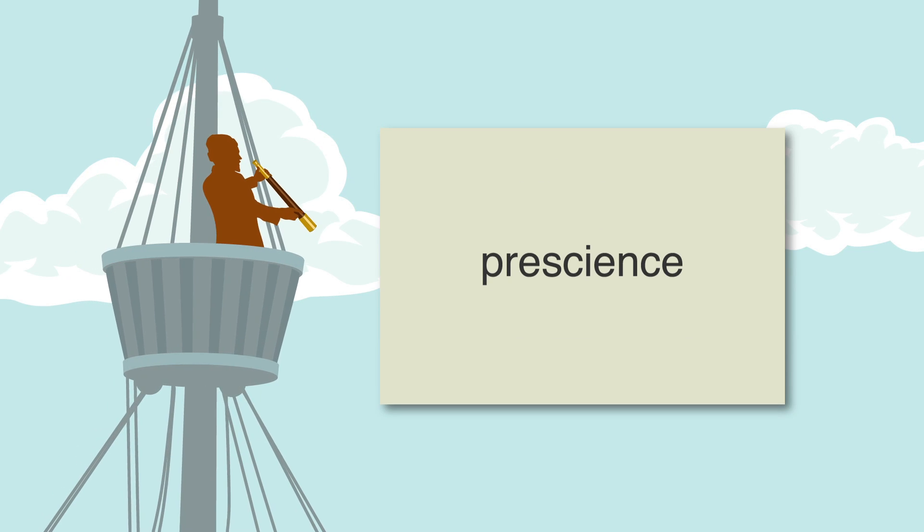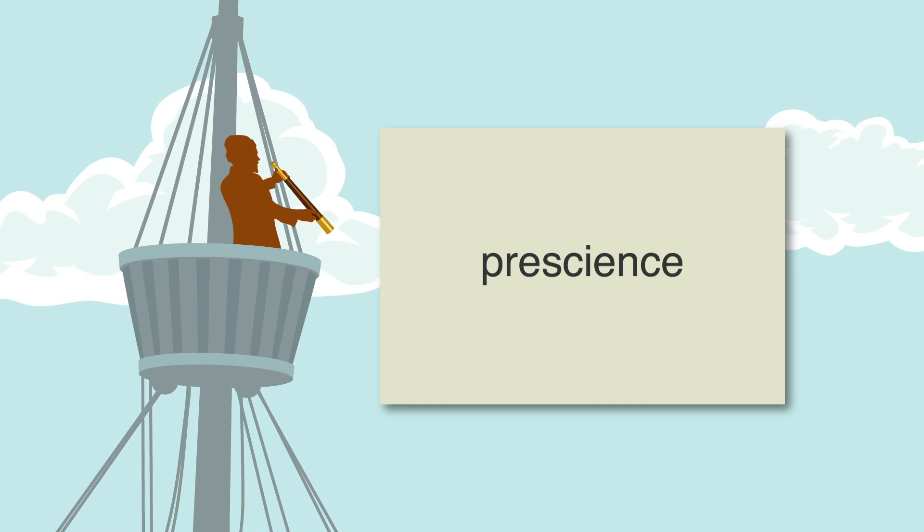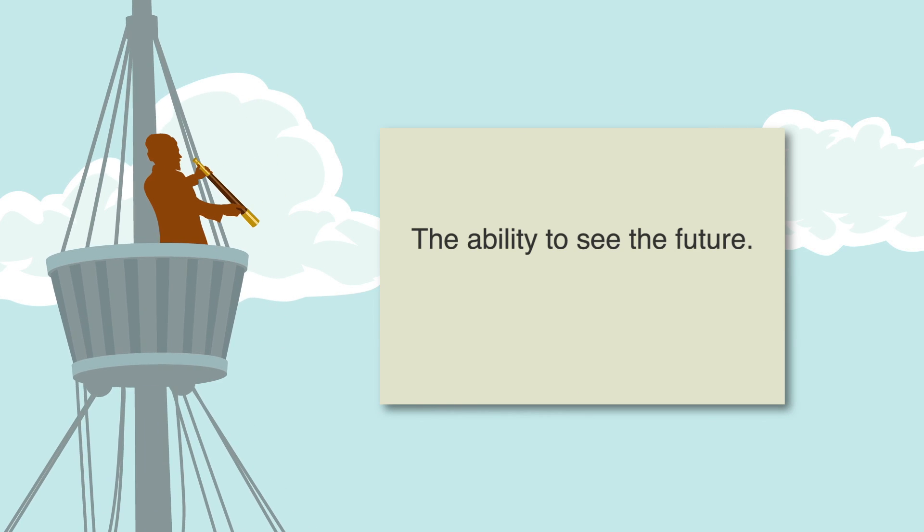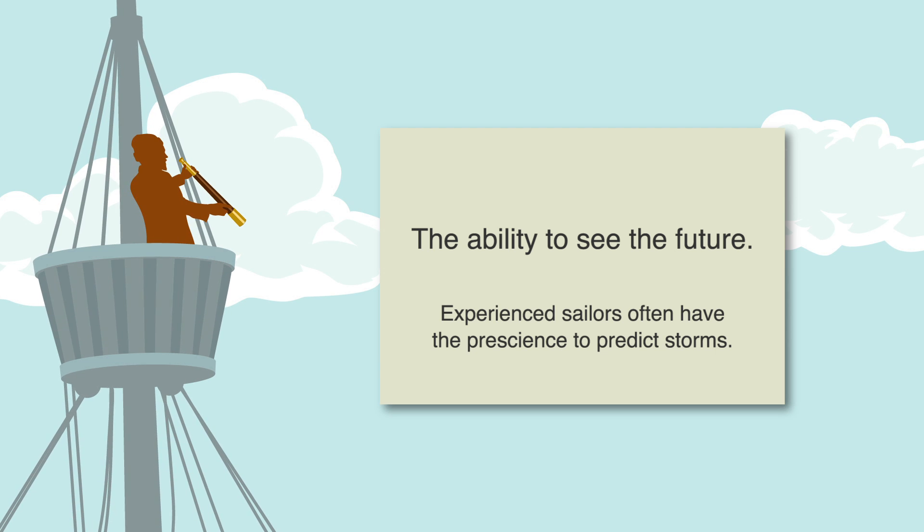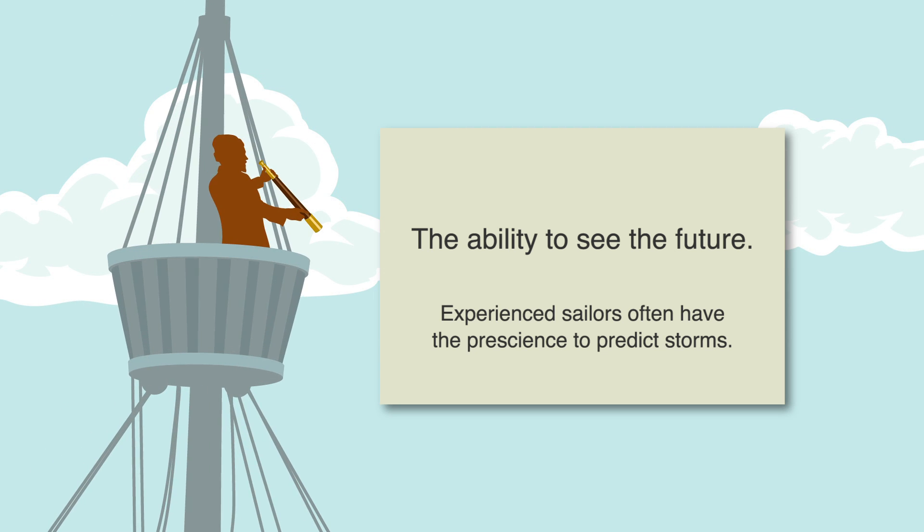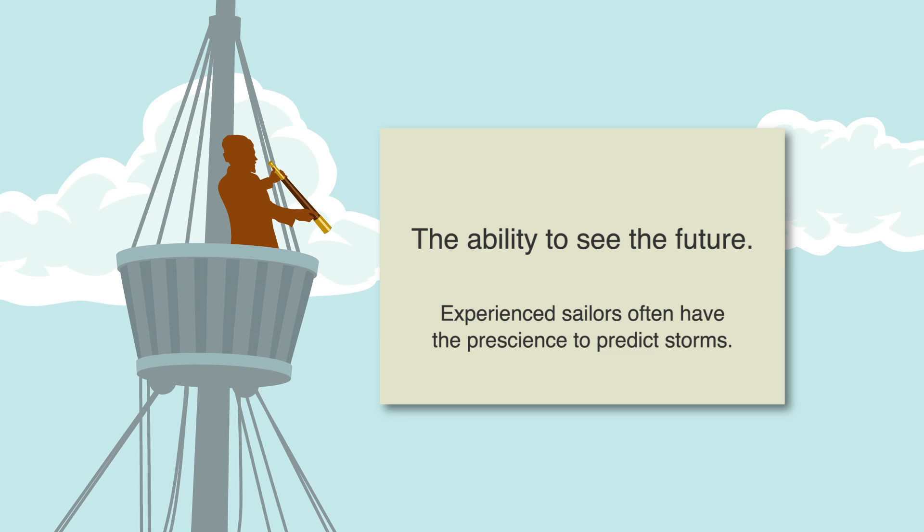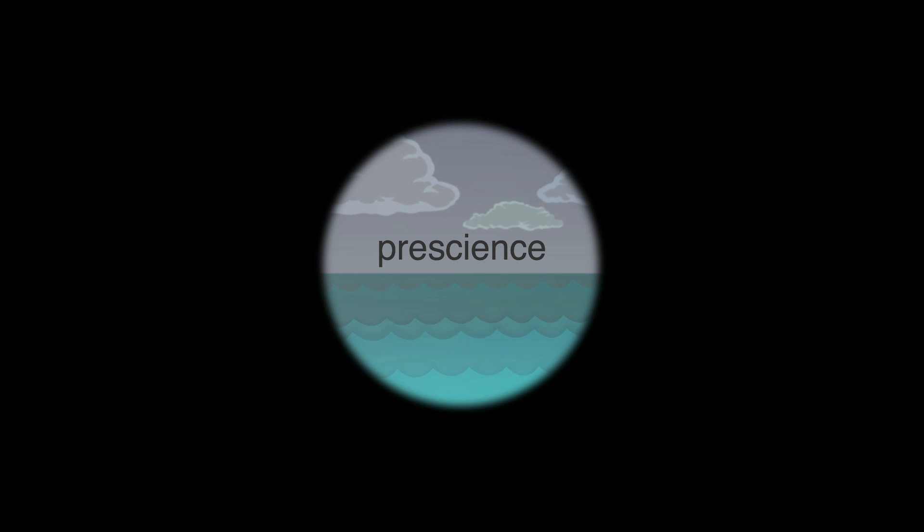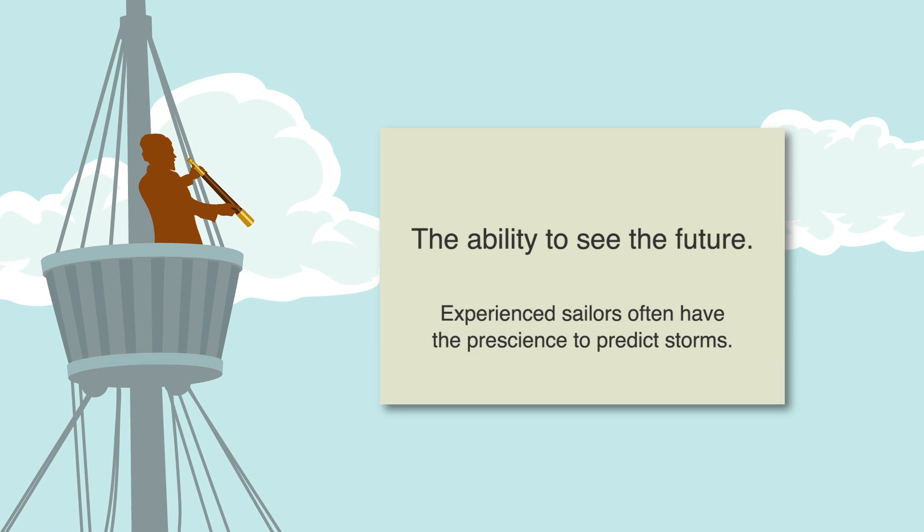Okay, let's get back to prescience. My flashcard for prescience would look something like this. My sentence could read, Experienced sailors often have the prescience to predict storms. This is also a good example of how you can identify the noun form of this adjective. If you know the word prescience, then you also know that calling someone prescient means that they have the ability to see the future, like our friend Rusty the Sailor here.